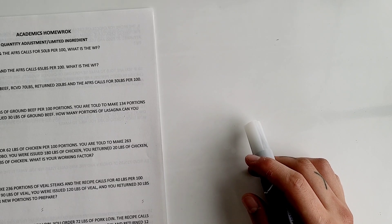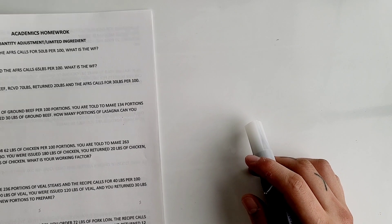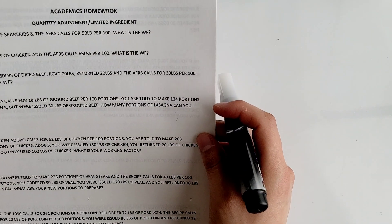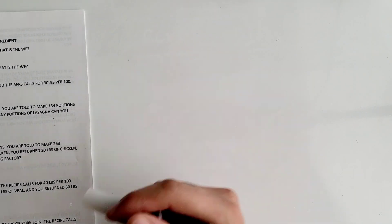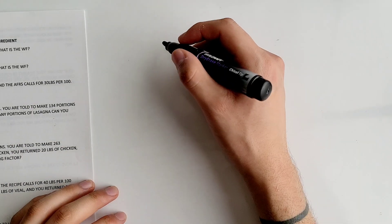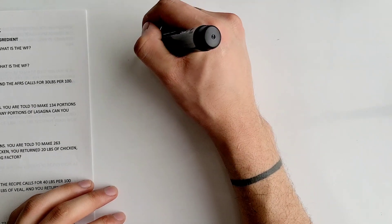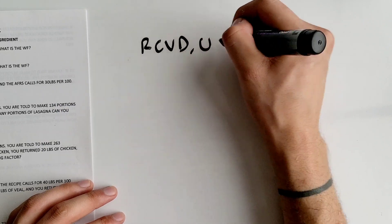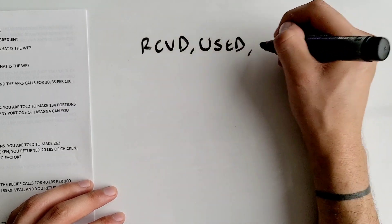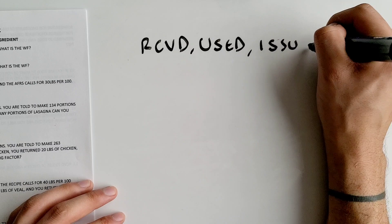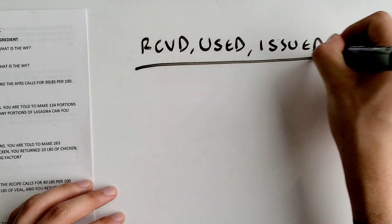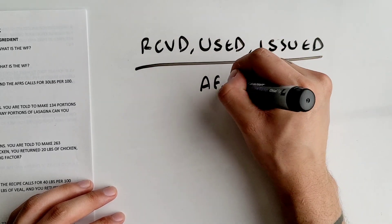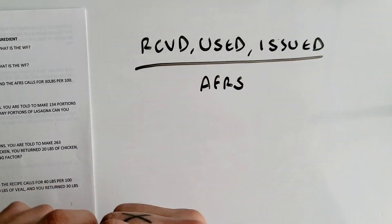Hey everyone, today we're going to be going over some more problems using your limited ingredient formulas — we're doing number three and four. The first thing I'm going to do is write down my formula, which is RCVD (received) or used/issued divided by your AFRS, or what the recipe calls for.